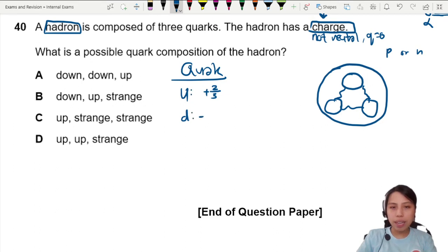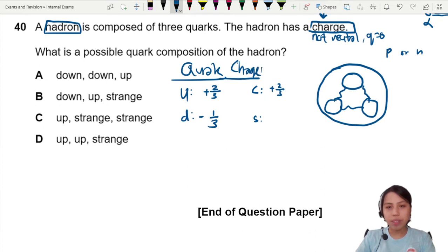Down is negative one over three. Then we add the last two, charm and strange. Charm and strange are cousins of up and down, so charm is also positive two over three charge. Strange is negative one over three. So you need to add together.